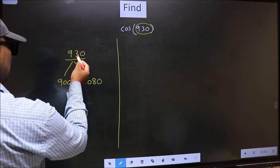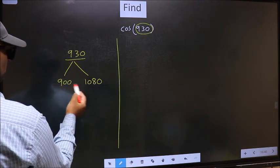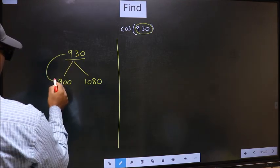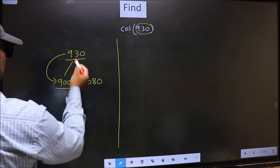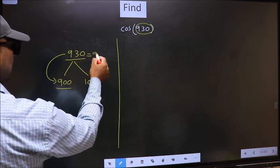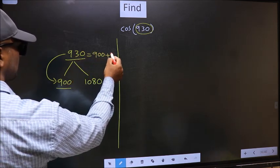Next, 930 is close to which number? This is close to 900. So 930 now should be written as 900 plus 30.